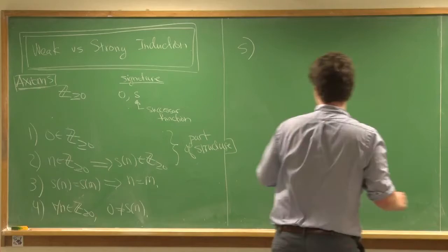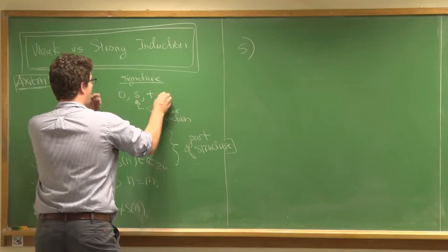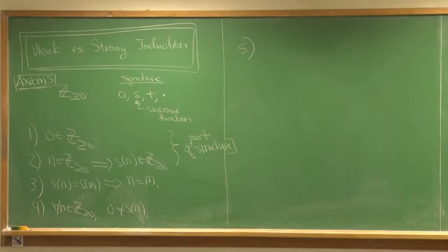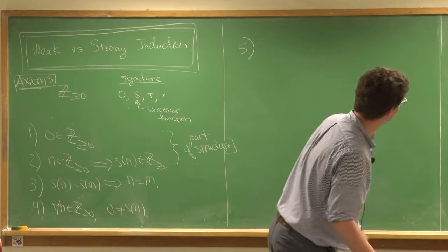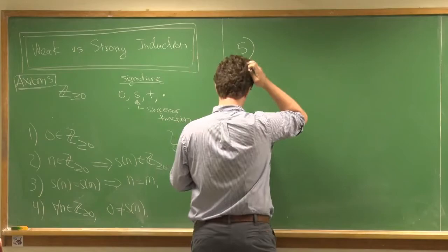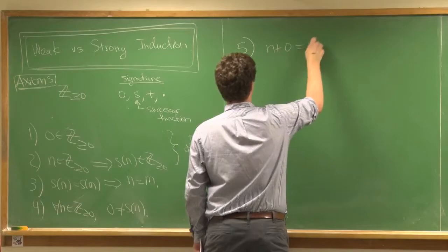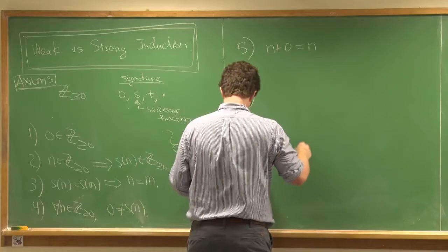What I'm going to do now is increase the signature to include two new operations: a plus and a times. I'm going to add some rules for how plus and times behave. This is like a souped-up version of the Dedekind-Peano axioms. The first new axiom says that N plus zero is N.